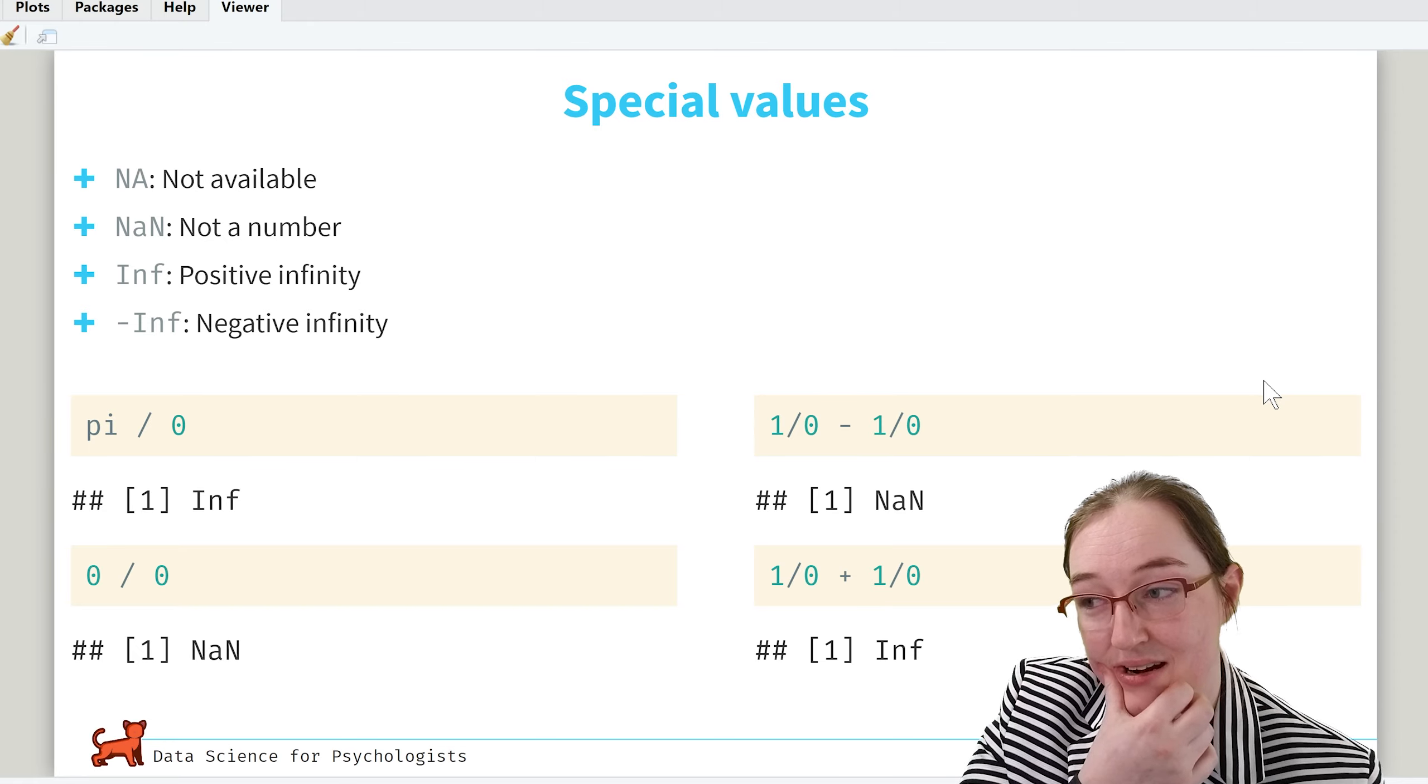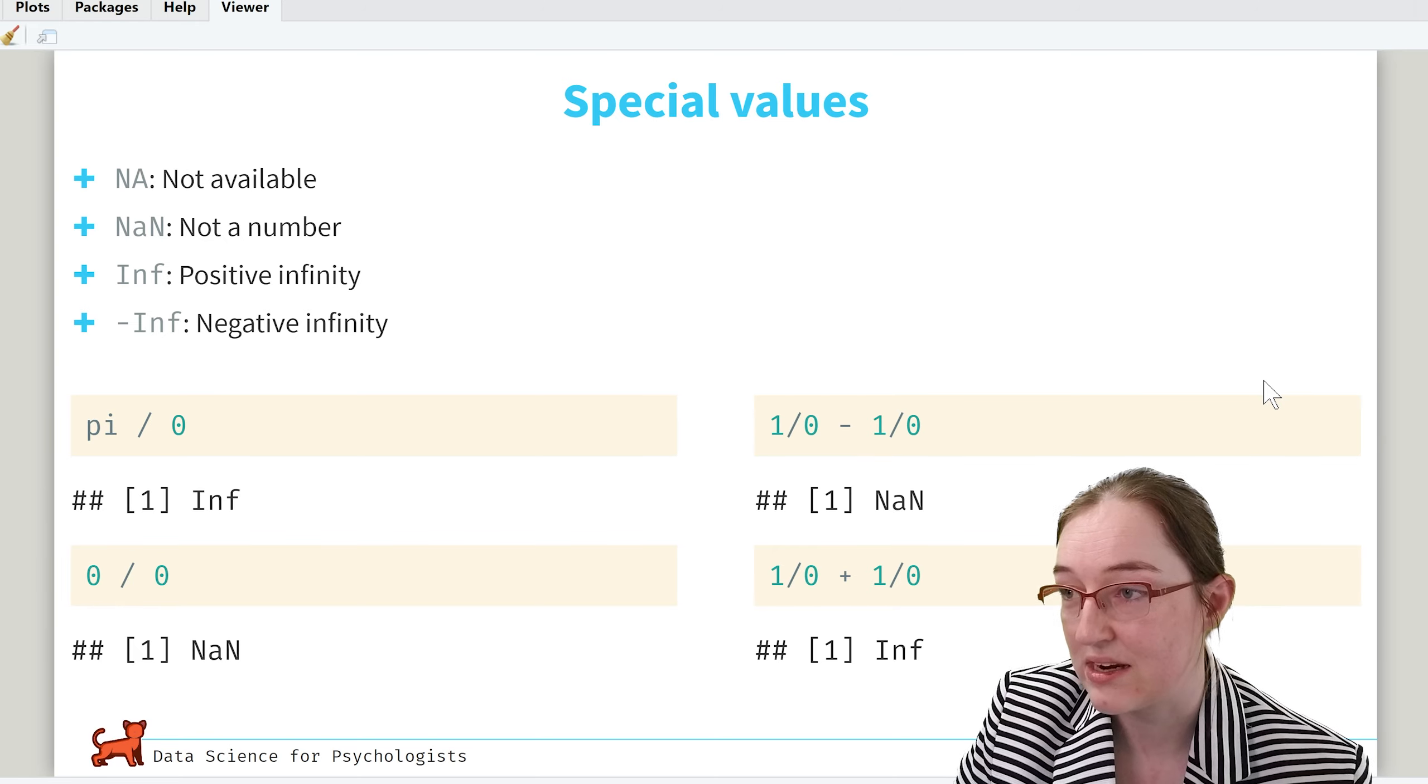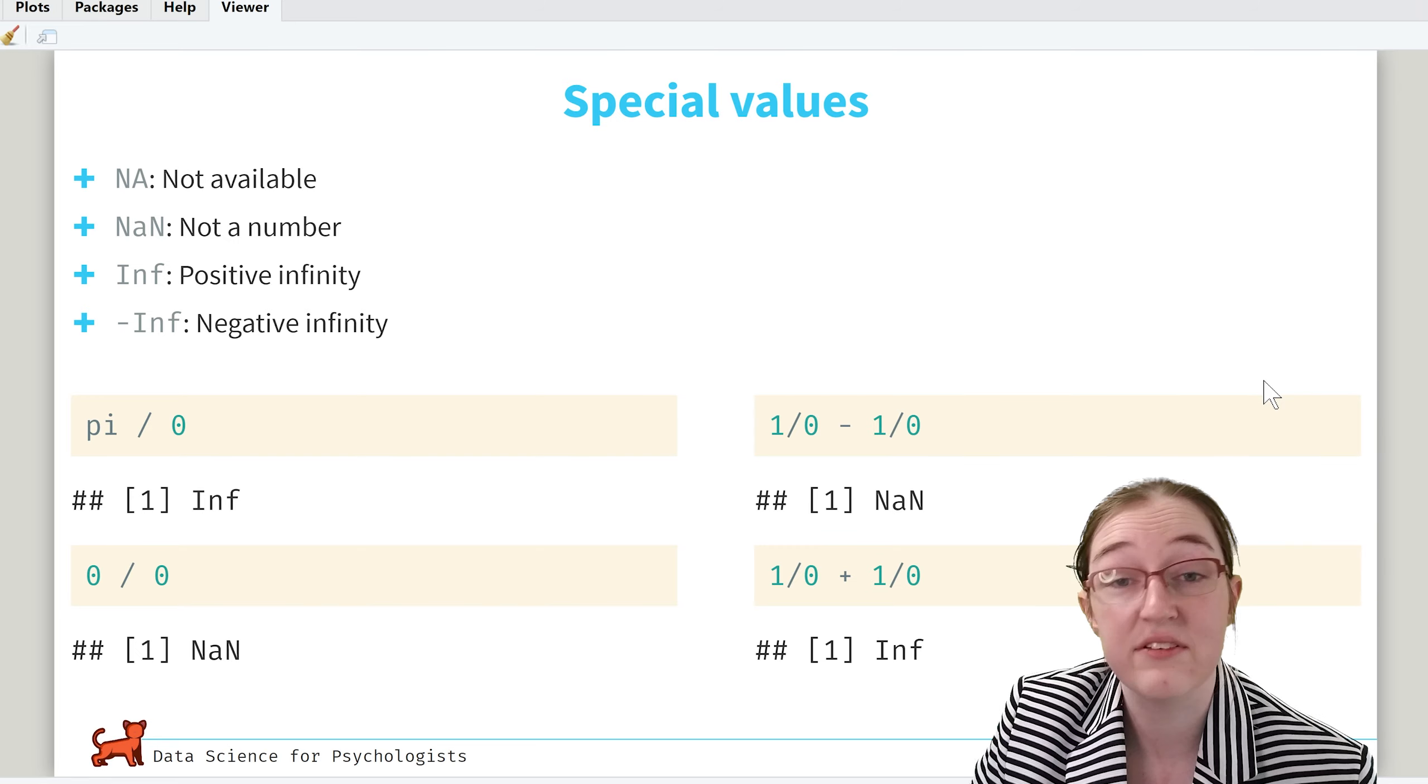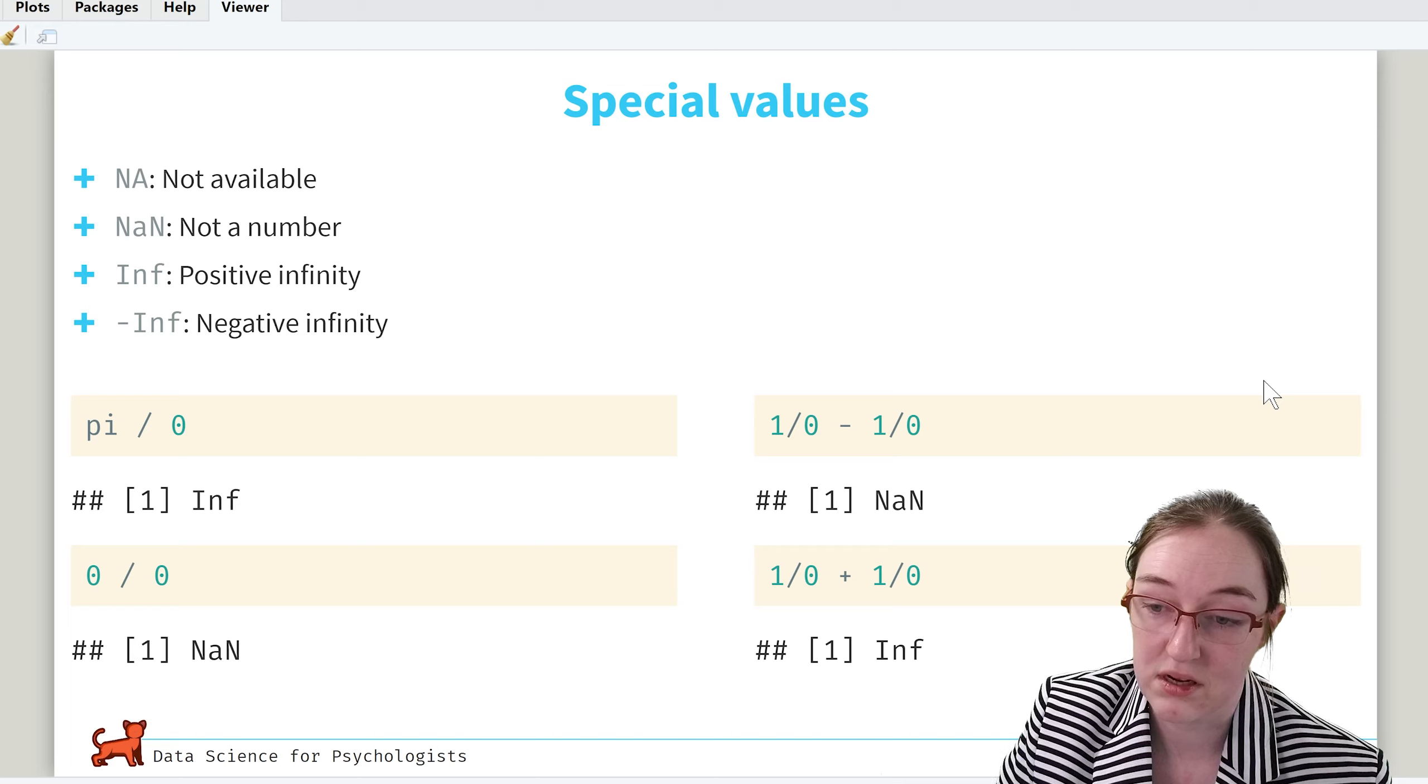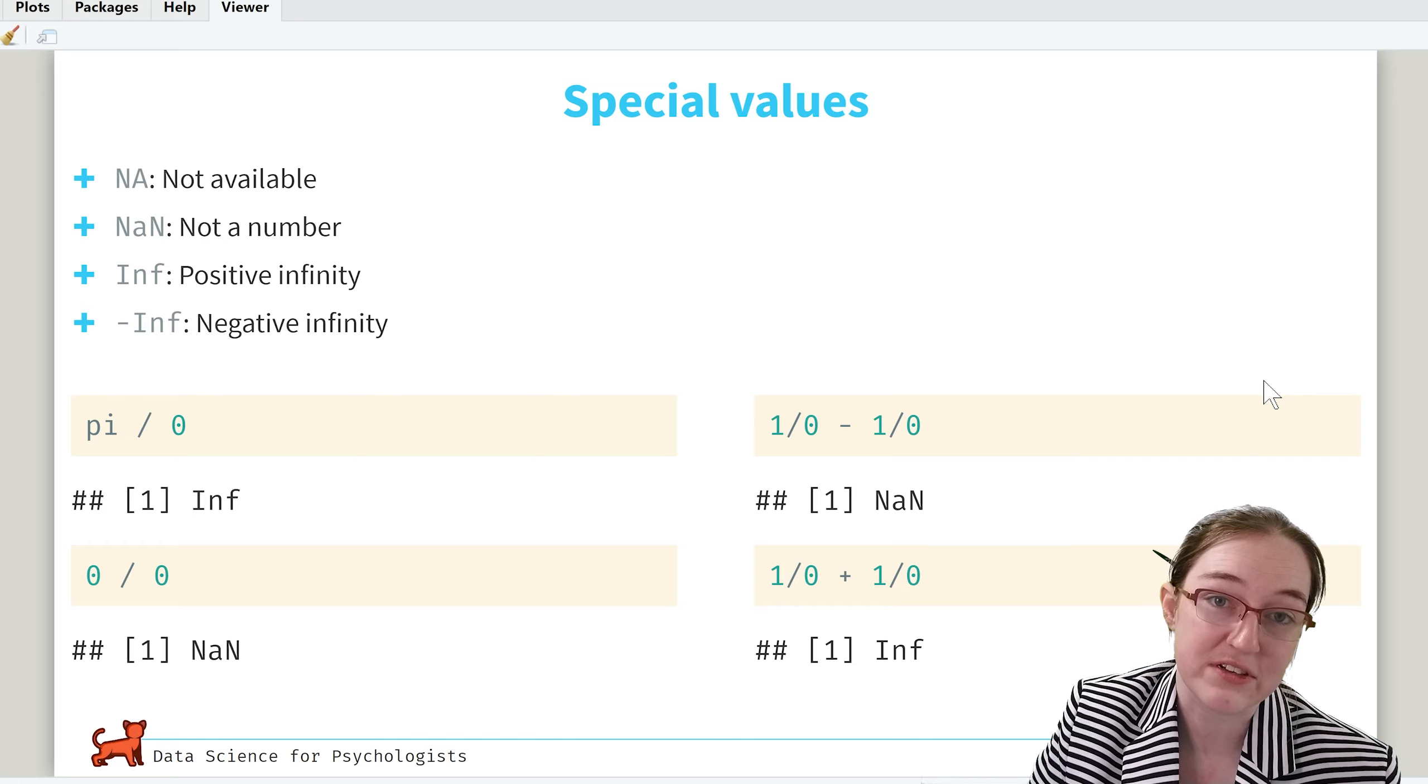For example, when we have pi divided by zero, we get positive infinity. When we divide zero by zero, which is illegal, we get not a number. We can also subtract infinity from infinity, so one over zero minus infinity gives us not a number. But if we add those two together, we get infinity. Because one infinity plus two infinity equals infinity. So there are special values in R.